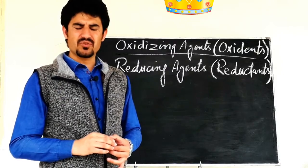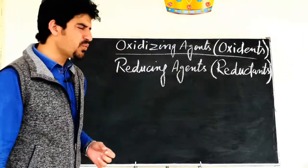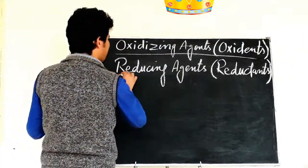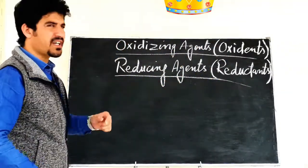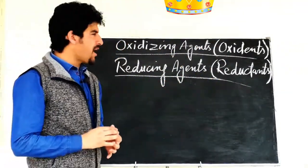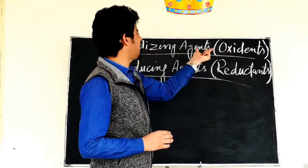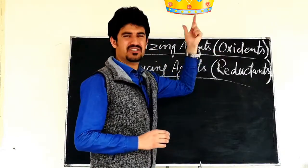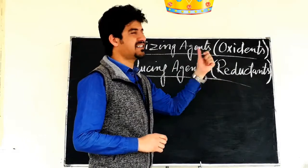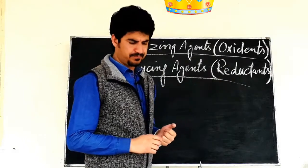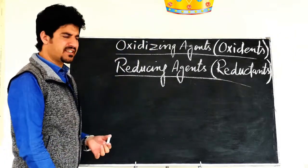Let's start with the topic: oxidizing agent and reducing agent. We call them oxidants. Oxidizing agents are oxidants and reducing agents are reductants. So let's start with the oxidizing agent.